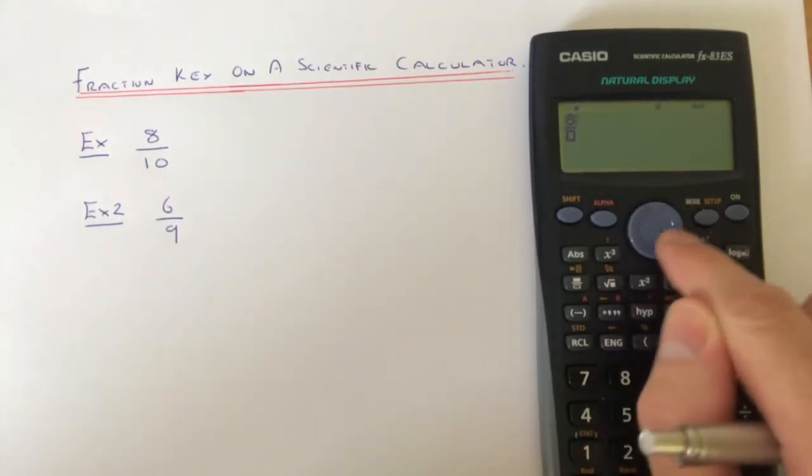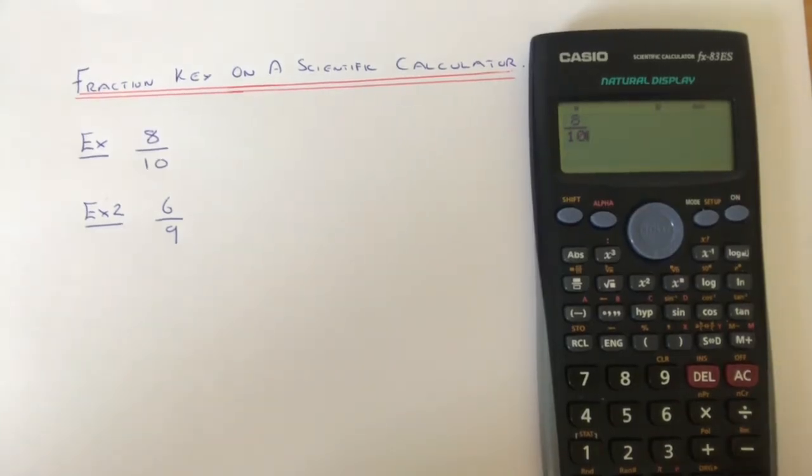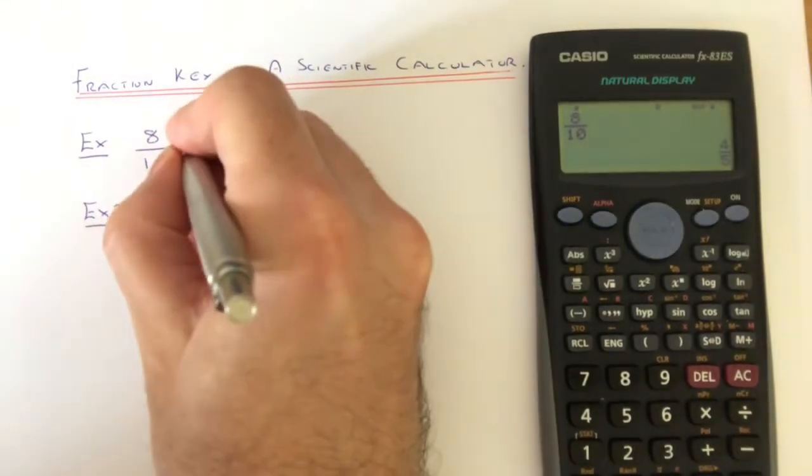use the replay key or the arrow keys to scroll down to the denominator. There's our fraction, type 10. If we hit the equals key, that will simplify the fraction for you, which gives an answer of 4 fifths.